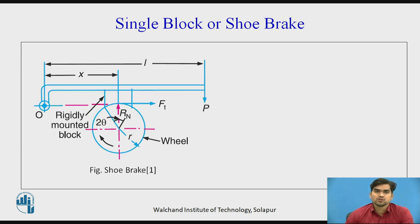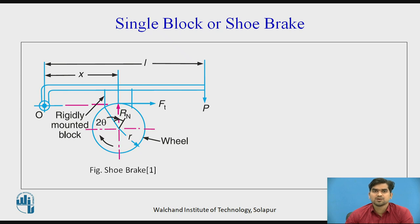First one: single block or shoe brake. This is a schematic diagram of a single block or shoe brake in which one lever is there, which is pivoted at point O — that is called the fulcrum O. On that lever, the shoe or block is mounted rigidly, and our rotating wheel is there, which is also called a drum. When the drum rotates in a clockwise or anti-clockwise direction and we want to stop it, we apply force at one end of the lever by an amount P in a downward direction. Then friction occurs between the block and the wheel, and the wheel gets stopped. This is the working of a single block or shoe brake.